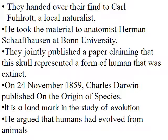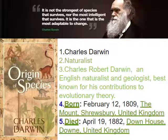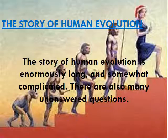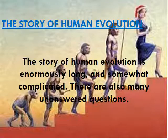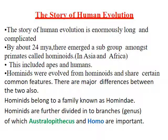Charles Robert Darwin argued that humans had evolved from animals. The story of human evolution is enormously long and somewhat complicated, with many unanswered questions. We can see pictures showing how we evolved from monkeys. The story of human evolution is enormously long and complicated.